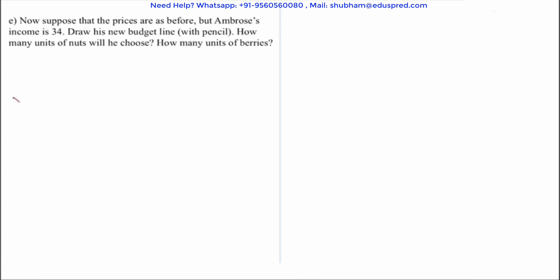From the previous part we know that let x1 denote nuts, x2 denote the number of berries consumed by Ambrose. Let p1 be the price of nuts and p2 be the price of berries. From previous part we know that p1 is 1, p2 is 2 and let m be his income where m is equal to 34.